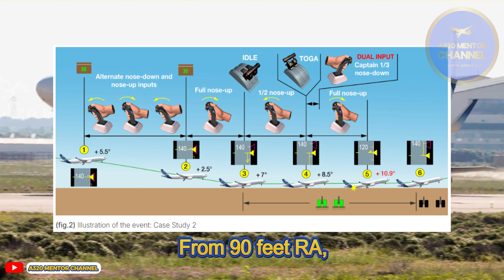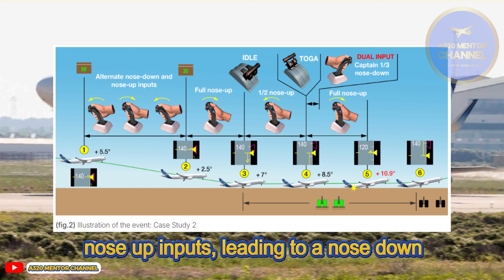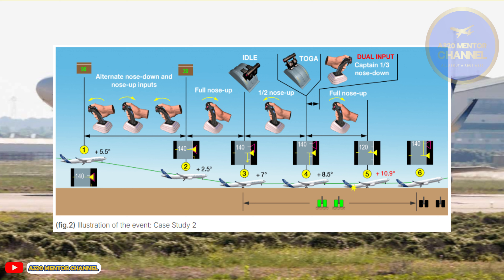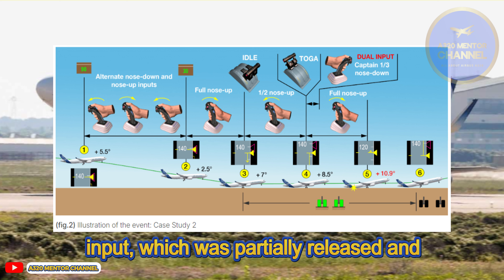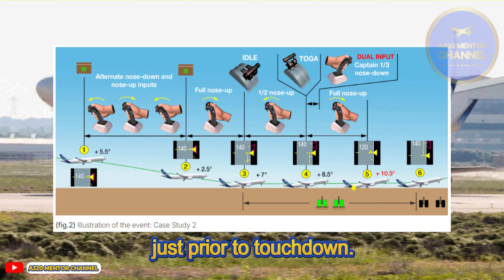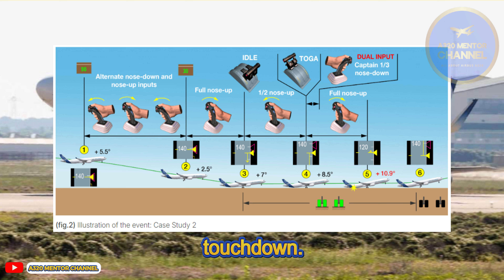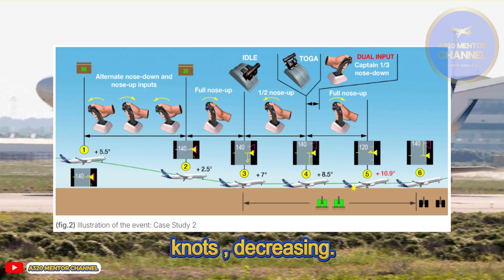From 90 feet RA, the PF alternated nose-down and nose-up inputs, leading to a nose-down tendency. The pitch reduced from plus 5.5 degrees to plus 2.5 degrees at 30 feet. The flare was initiated at 30 feet by application of a close-to-full nose-up input, which was partially released and then followed by another full nose-up input just prior to touchdown. Thrust levers were retarded to idle simultaneously at the point of the hard touchdown. The pitch was plus 7 degrees and the speed was 135 knots, V-app minus 4 knots, decreasing.